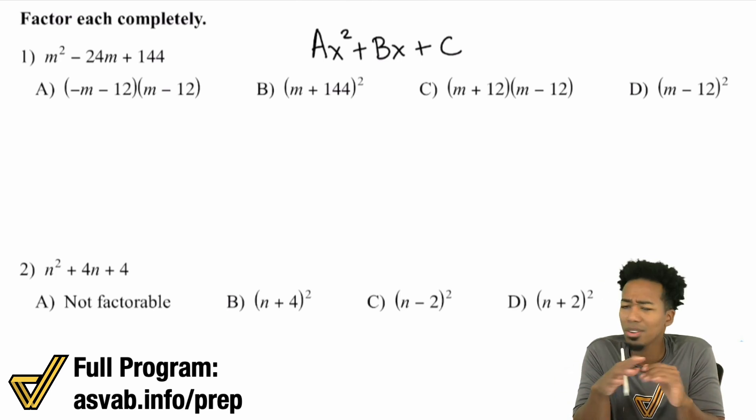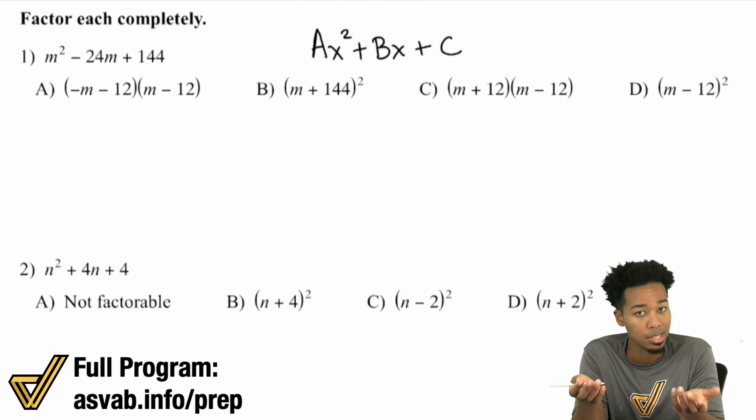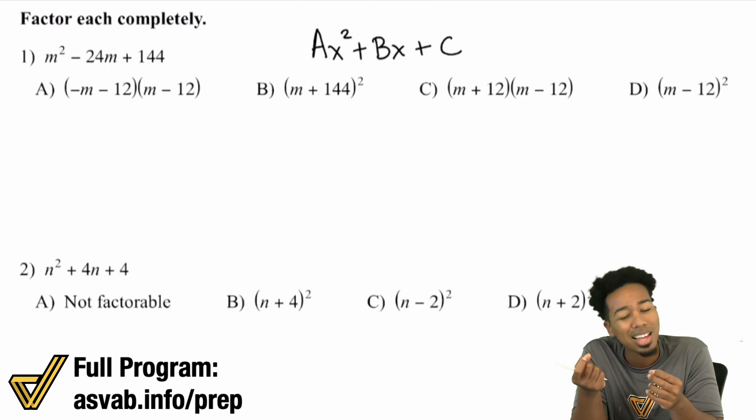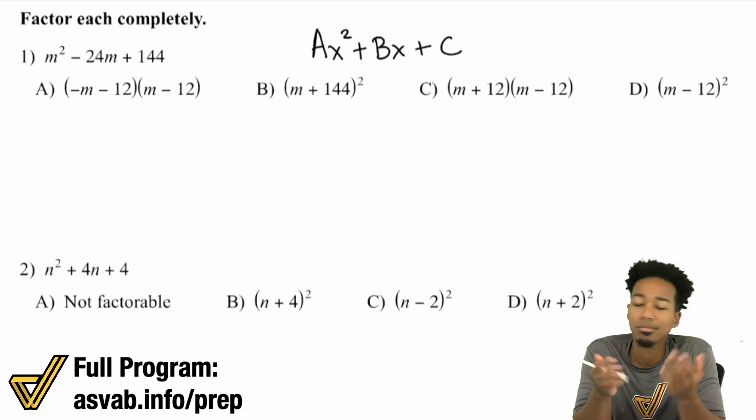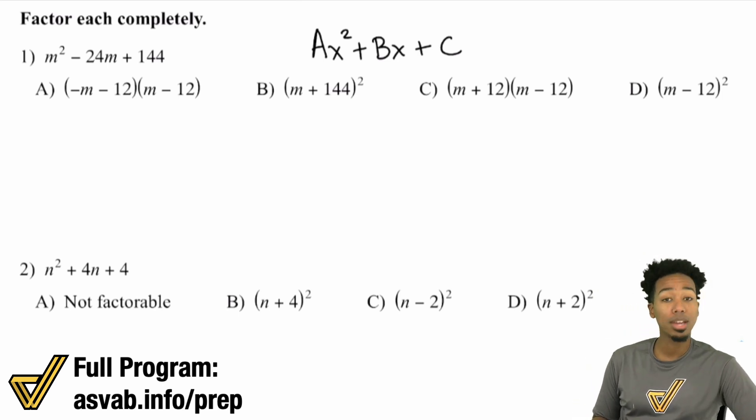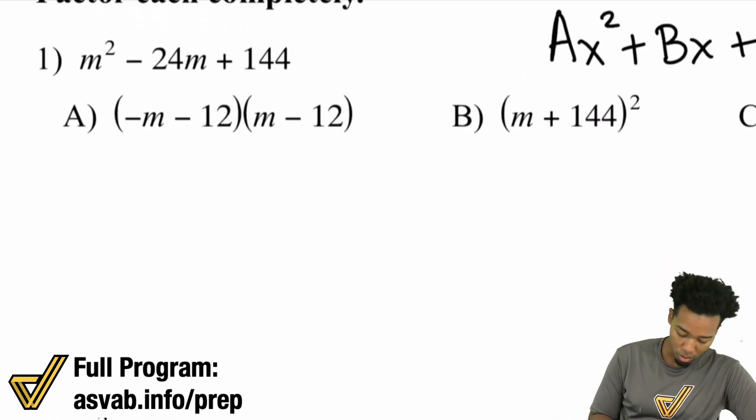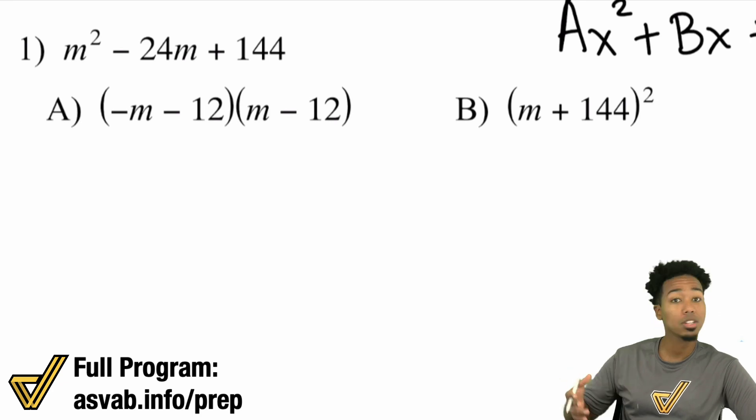Let me show you what that means very briefly. This is just a follow-up from factoring trinomials. So everything I'm going to do is going to make sense, but I'm going to show you just a slight little difference in terms of what you're going to see. Here we go. So we have M squared minus 24M plus 144. If you didn't watch that previous video, watch it so you can see what I'm about to do.